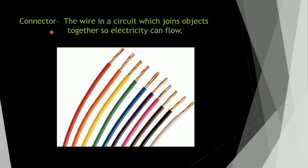Next one — connector. The wire in a circuit which joins objects together so electricity can flow. See the picture of the wire — this is called a wire. Connector means the wire in a circuit which joins objects together so electricity can flow.